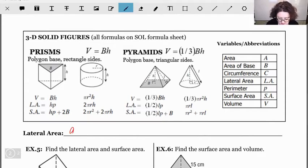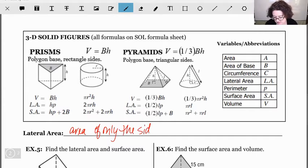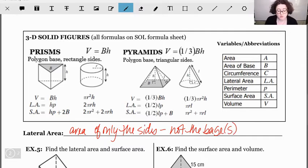So lateral area is area of only the sides, not the base or bases, because when you're dealing with something like a prism, like those first two shapes, technically you have two bases. You have the top side, which is a triangle, and then you have the same exact triangle on the other side. Both are considered bases. Same thing when you're looking at a cylinder. You have the circle on the top, you have the circle on the bottom. Those are your two bases. And then you've got your sides going around.